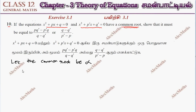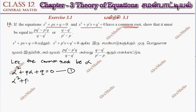Now, substituting into the first equation with x = alpha: alpha² + p·alpha + q = 0. This is the first equation. For the second equation, substituting gives: alpha² + p'·alpha + q' = 0. Now we subtract these two equations.